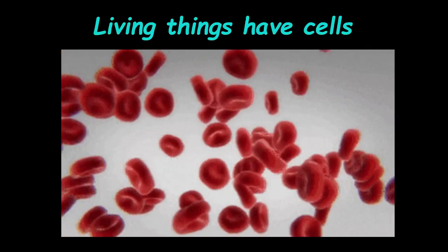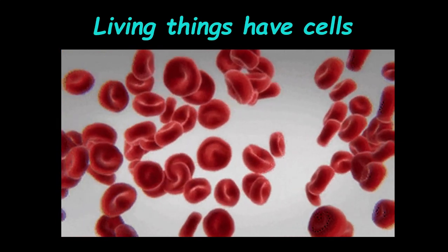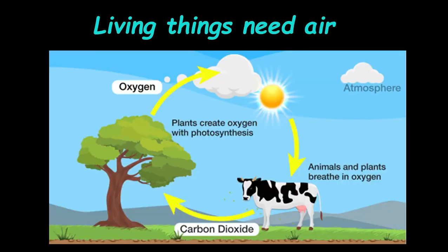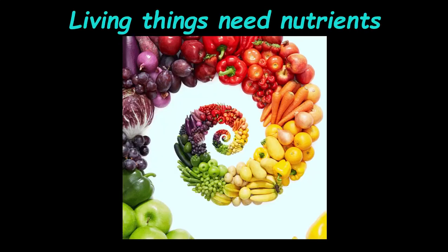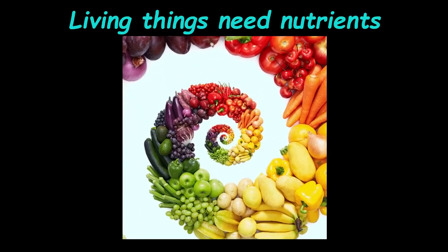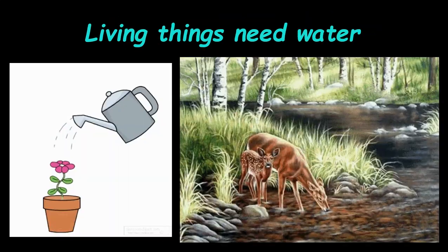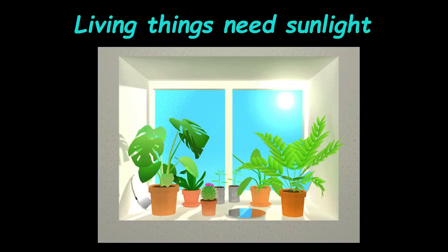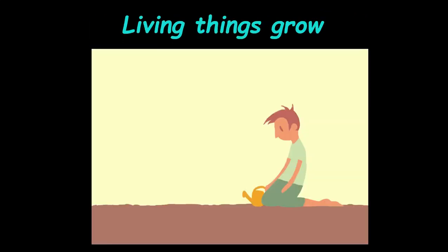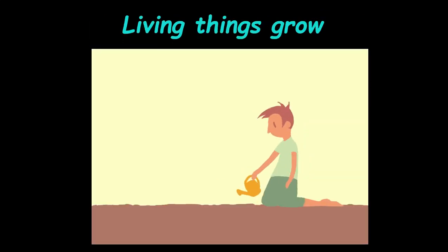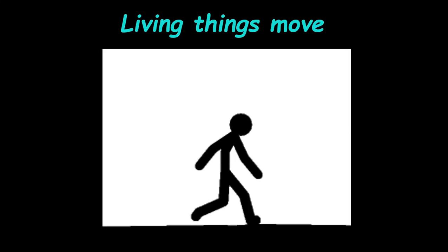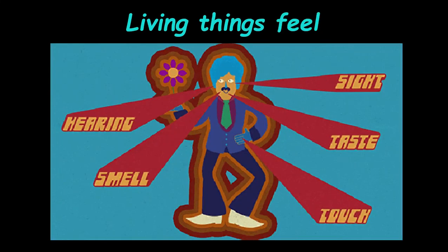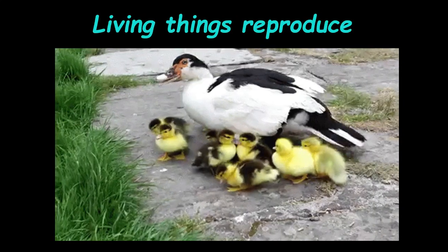Characteristics of living things: living things have cells; living things need air; living things need nutrients; living things need water; living things need sunlight; living things grow; living things move; living things feel; living things reproduce.